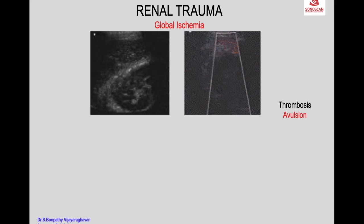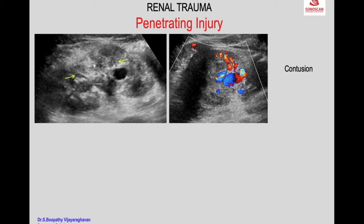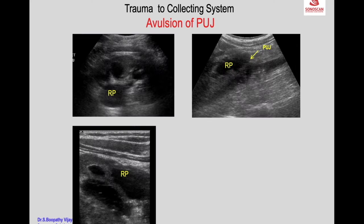In another case, the kidney looks normal on grayscale. There is a laceration and a perinephric hematoma, and there is a cystic area in the lower pole which on color Doppler shows that it is a pseudoaneurysm on the renal pelvis and at the pelvi-ureteric junction.